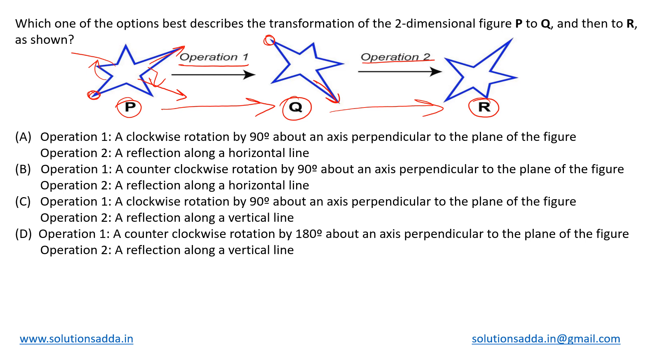Let us see if that's in any of the options. The first one is saying a clockwise rotation by 90 degrees about an axis perpendicular to the plane of the figure, which means from the same axis we simply flip this 90 degrees to the right, then we will get figure Q. This seems to be the correct operation.